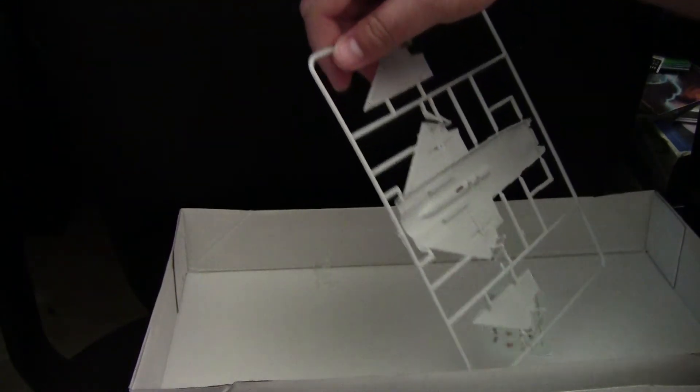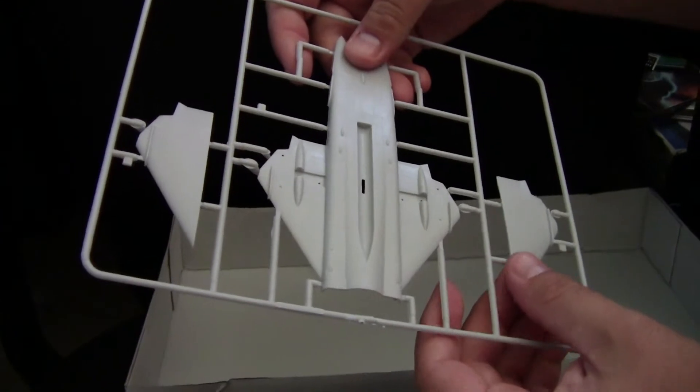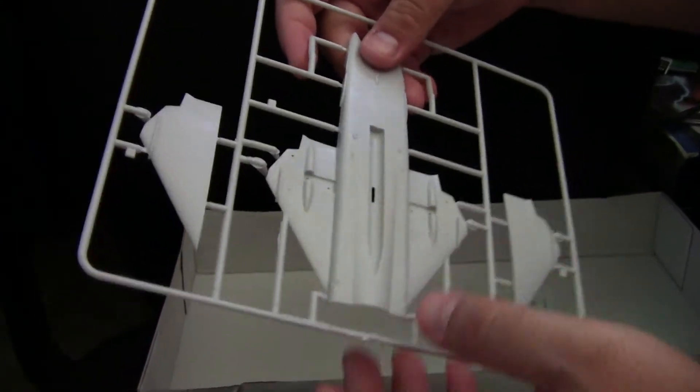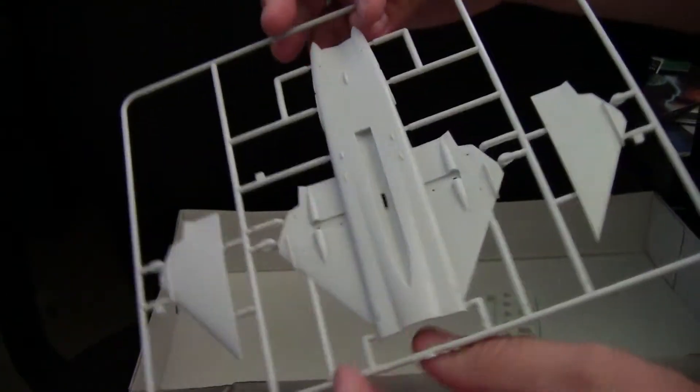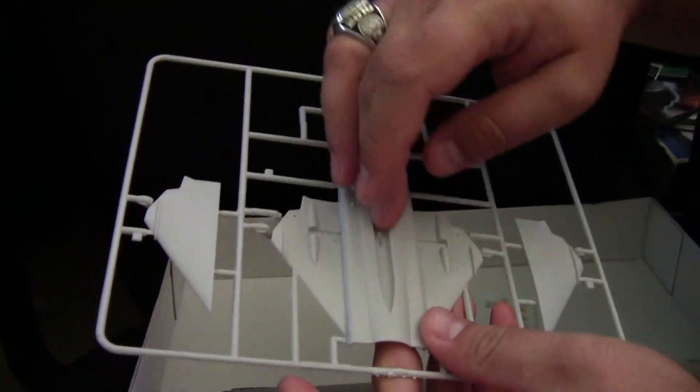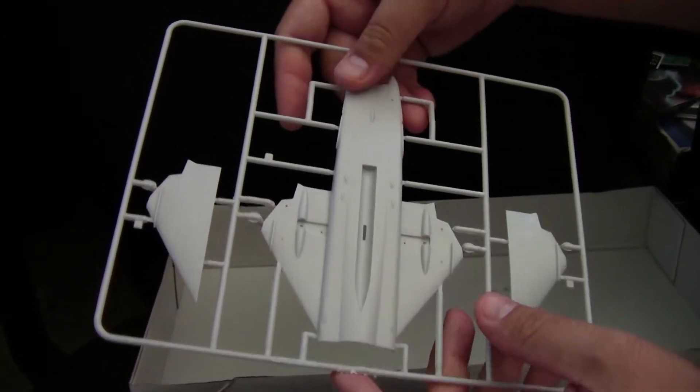Continuing on, we've got our lower piece large part, as well as a couple attachment points for the upper parts of the wing roots. As I mentioned, you only have capacity for a single missile on this kit, which is a little disappointing.